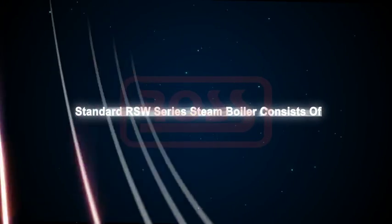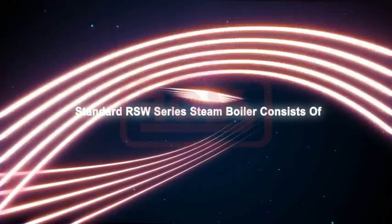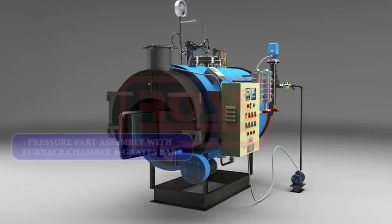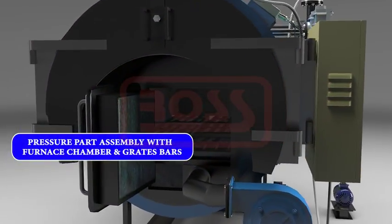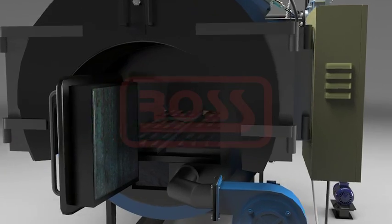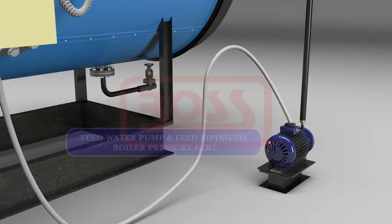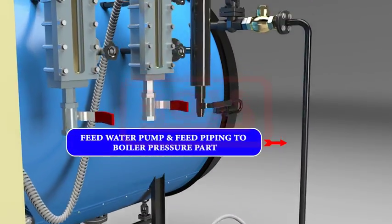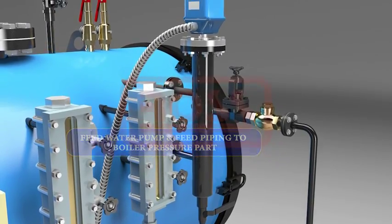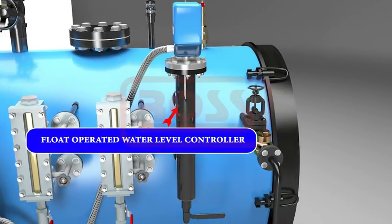Standard RSW series steam boiler consists of pressure part assembly with furnace chamber and grate bars, feed water pump and feed piping to boiler pressure part, and float operated water level controller.